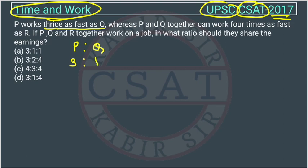If Q is taking three days to complete a work, P can complete that work in one day. Whereas P and Q together can work four times as fast as R. So if P and Q are working together, their efficiency in comparison to R is given.